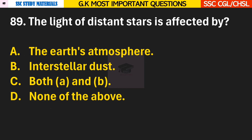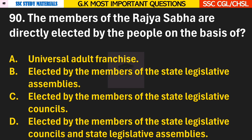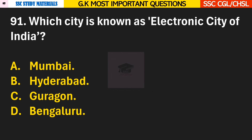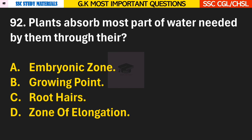Question 89: The light of distant stars is affected by? Answer C — Both A and B, so it is affected by the Earth's atmosphere and interstellar dust. Question 90: The members of the Rajya Sabha are elected by? Answer B — Elected by the state legislative assemblies. Question 91: Which city is known as the electronic city of India? Answer D — Bangalore is known as the electronic city of India. Question 92: Plants absorb most part of water needed by them through their? Answer C — Root hairs.